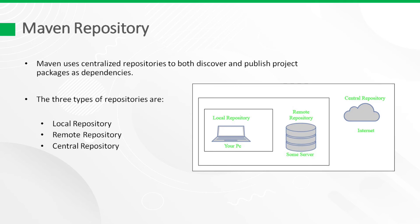Remote repository: when using Maven, particularly in a corporate environment, connecting to the internet to download dependencies is not acceptable for security, speed, or bandwidth reasons. For that reason, it is desirable to set up an internal repository to house a copy of artifacts and to publish private artifacts. Central repository: Maven central repository is the repository provided by the Maven community. It contains a large number of libraries which are accessible over the internet. When Maven does not find any dependency in the local repository, it starts searching in the central repository.